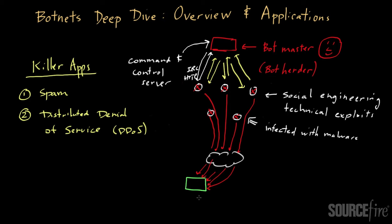That system will have a hard time responding to legitimate requests as well. For example, if this is an online gambling site and a legitimate user tries to visit at the same time all these bots are requesting service from the same site, the site might crash under the load. Whatever communication the legitimate node made to the site, the site won't be able to give a response back to a legitimate customer.